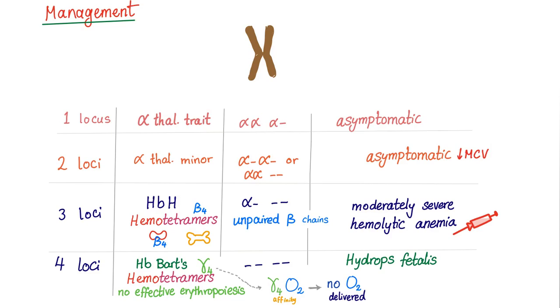How to manage alpha thalassemia? If only one locus is deleted, asymptomatic, do nothing. Two loci, asymptomatic, mild anemia, decrease MCV. You have to observe them. Three genes deleted, moderately severe hemolytic anemia. We have to get blood transfusion. Have to give them blood. We try to postpone it until they become adults. Hydrops fetalis, there is nothing you can do to cure it. Unfortunately, unfortunately, no cure.